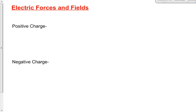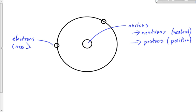If we get a bunch of atoms together, then we have an object. Maybe we have a compound — maybe we have a bunch of compounds in that object. That object can be either neutrally charged, positively charged, or negatively charged. Can anybody explain to me how an object is positively charged — not how it gets there, but what the properties of it are when it is positively charged?